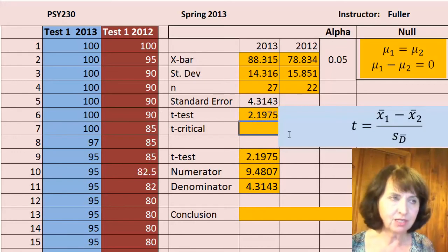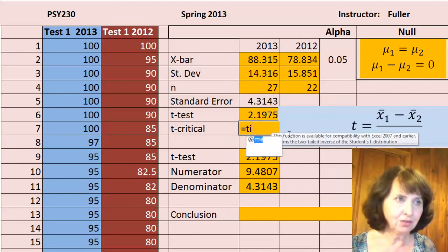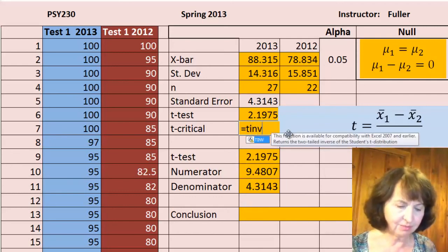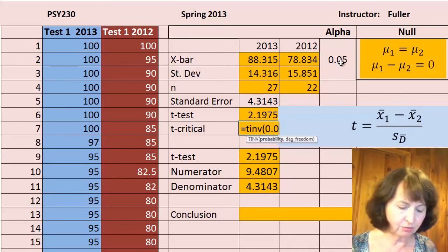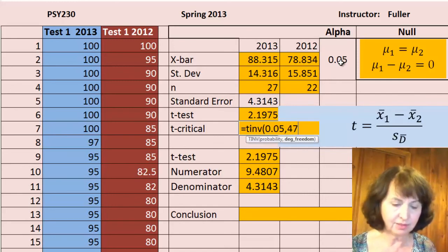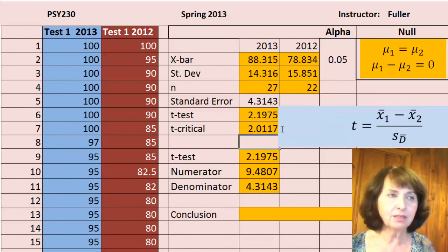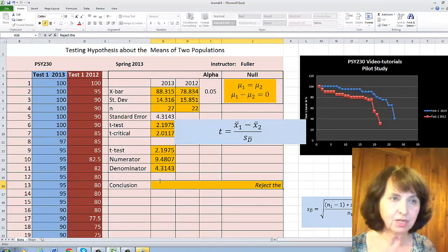I would like to have also t-critical, which is t-inverse of the alpha value, which is 0.05, and the degree of freedom, 27 plus 22 minus 2 equals 47. As we can see, t-critical is less than t-test, so we have to reject the null hypothesis.